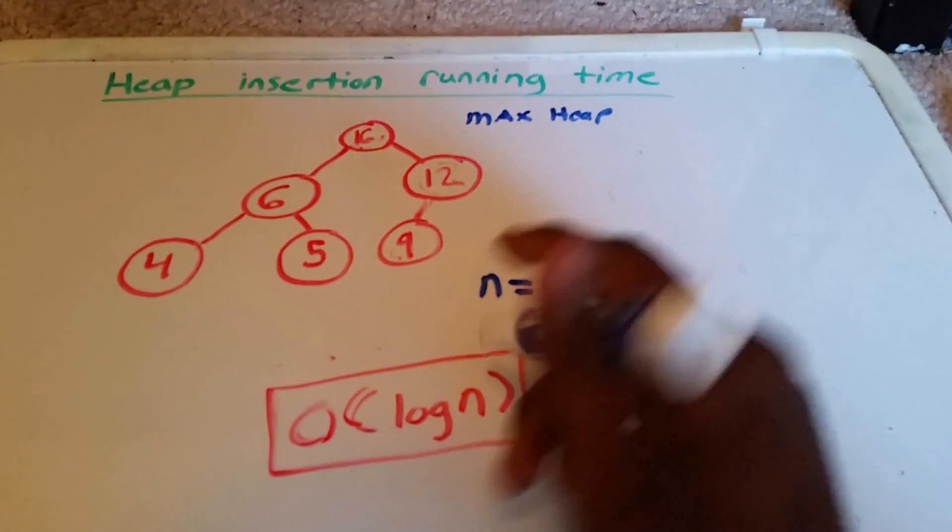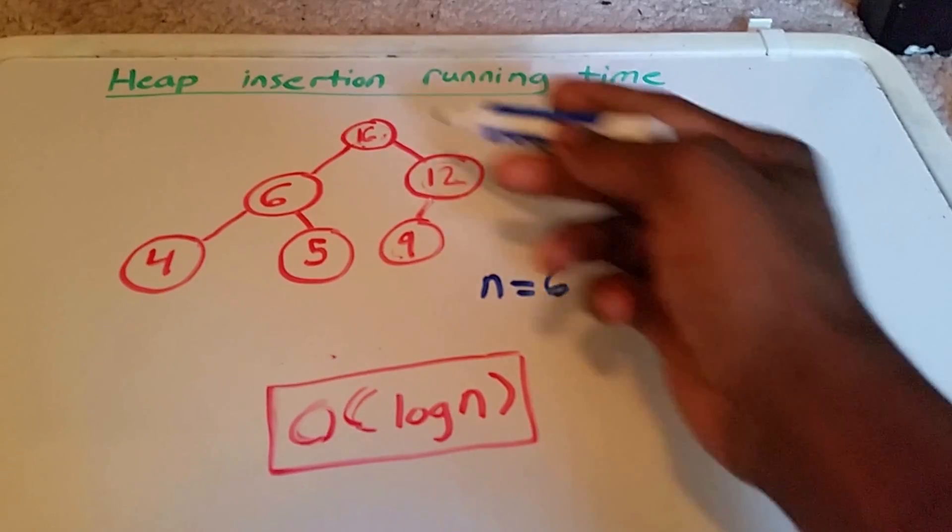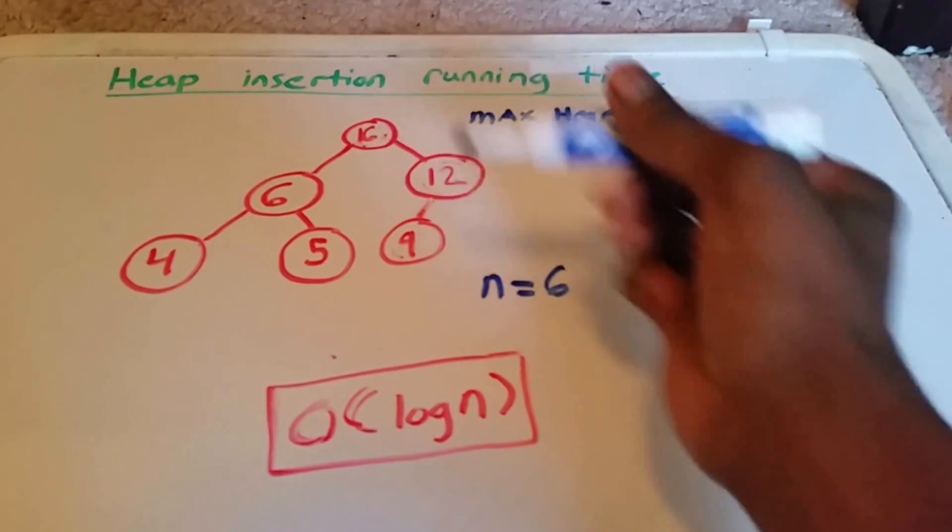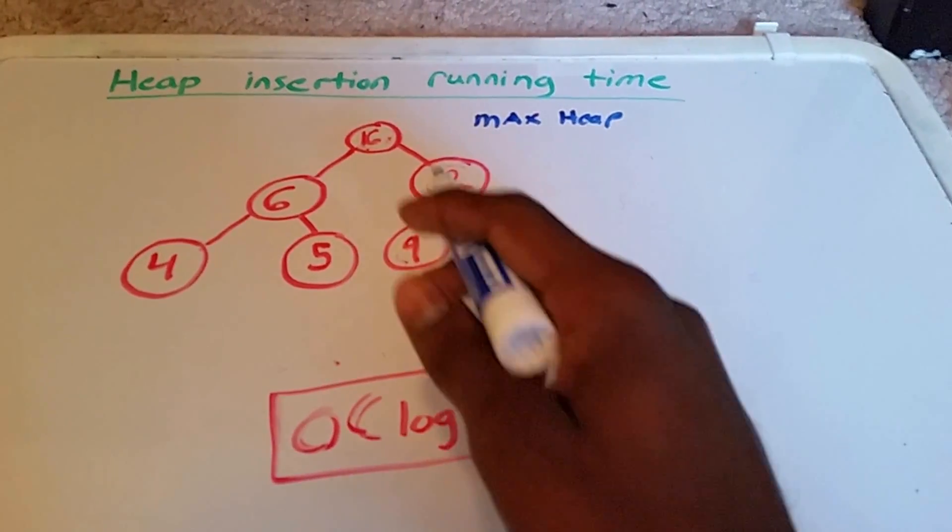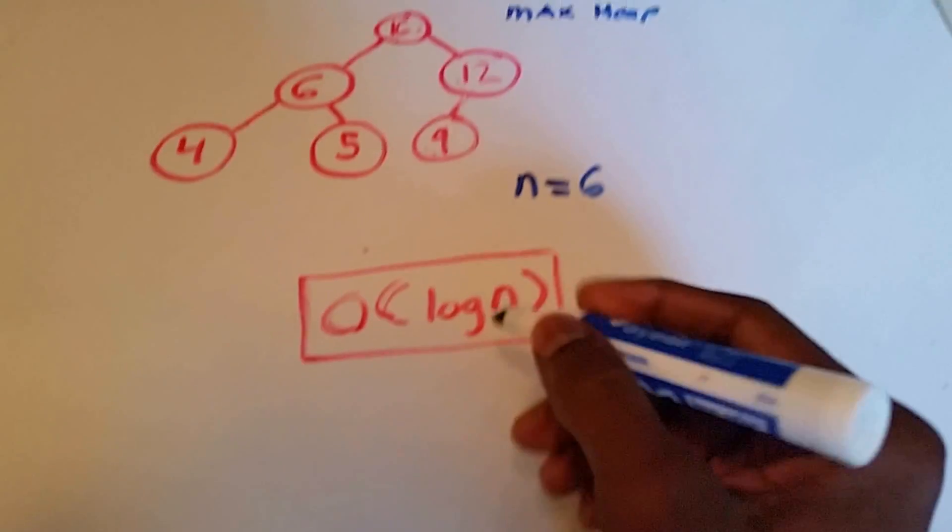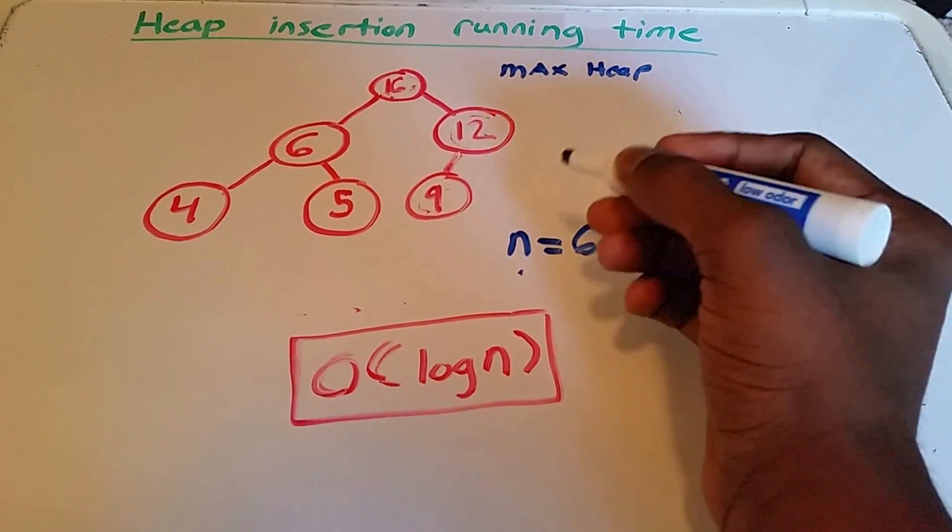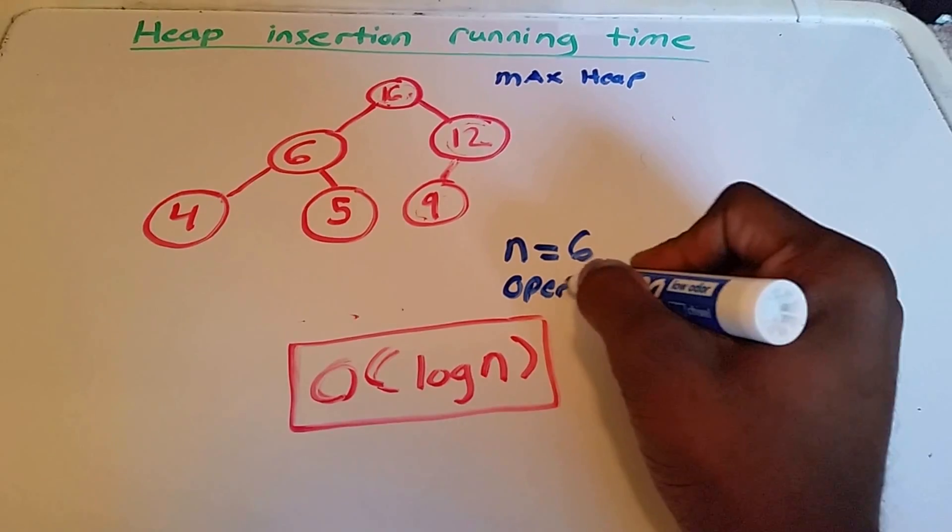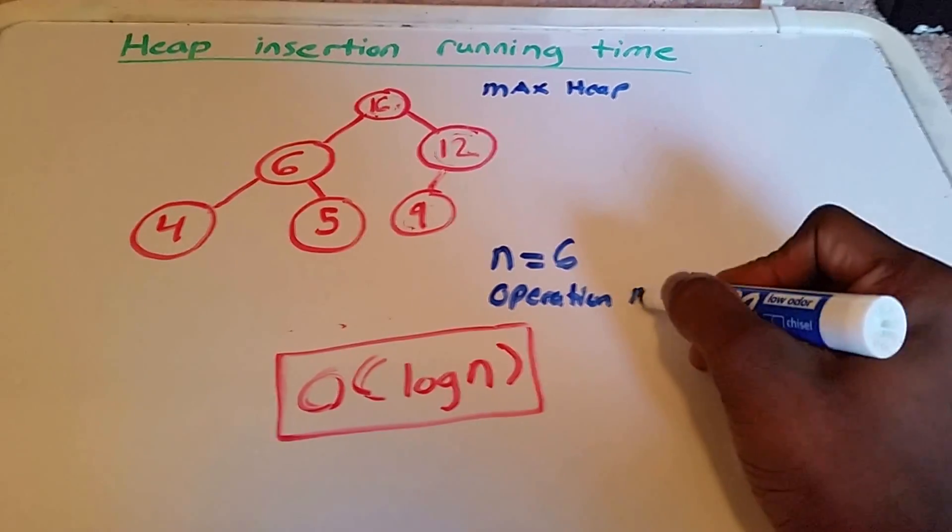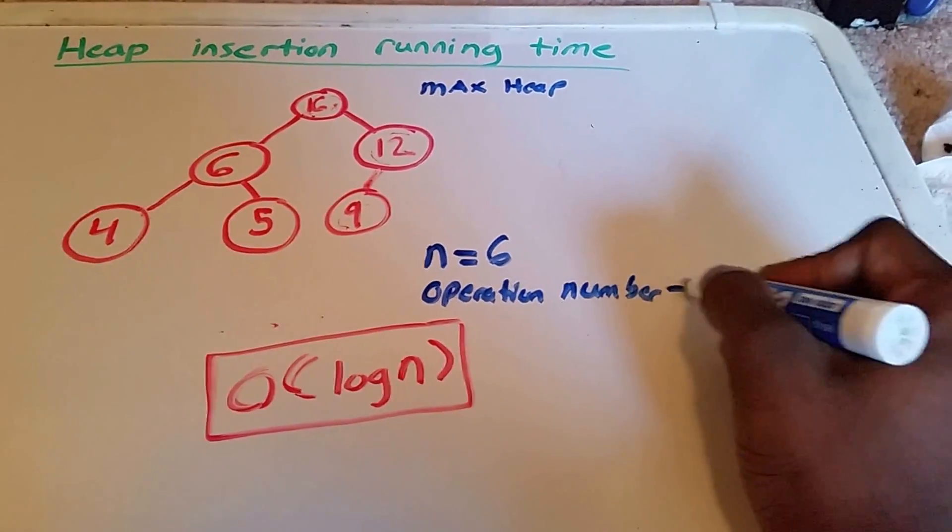So how many operations did it take to get to the top to where we were done inserting the element 16? Well, that took 2 operations. So operation number equals 2.